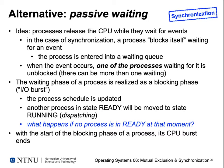This waiting phase of a process is realized similar to an IO access as a blocking phase — which for IO we've called an IO burst. When this happens, the process scheduler is updated so another process can use the CPU. Another process in the ready state will be selected by the OS and moved to the running state, while the process that was unsuccessfully trying to enter the critical section is blocked until the critical section becomes free again.